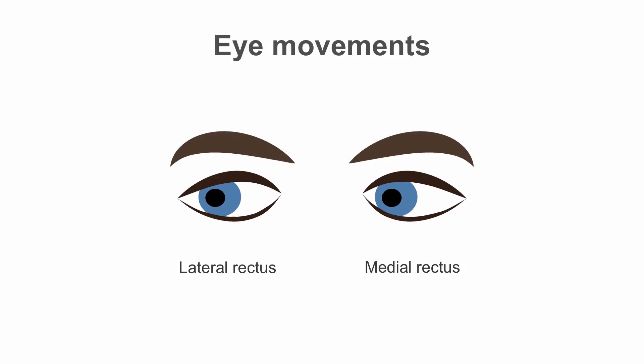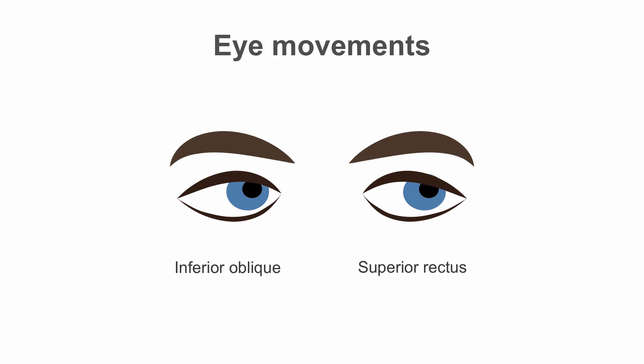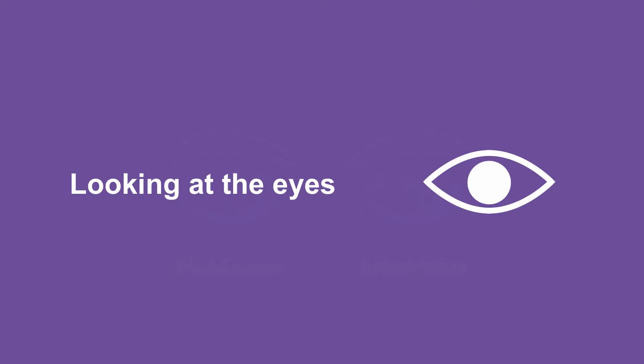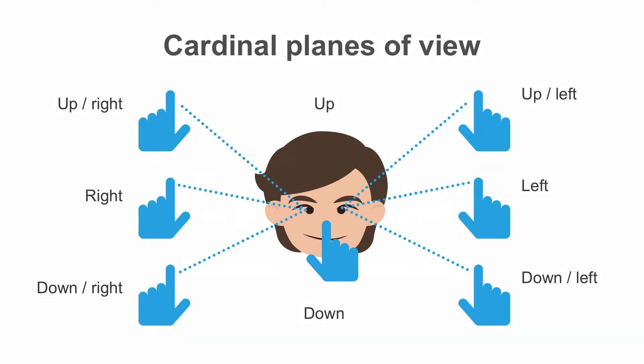In this graphic you can see the major muscles involved in moving each globe through the cardinal field of view. This is presented for study in a handout from this lesson. There are nine cardinal planes of view.